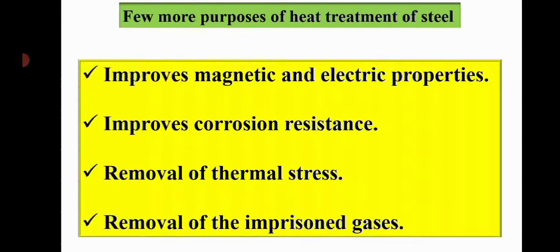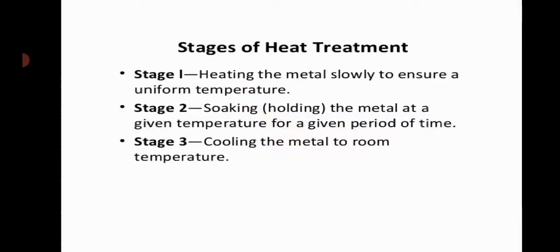The process of heat treatment consists of three steps. First, heating the metal slowly to ensure uniform temperature. Second, soaking the metal at a given temperature for a given period of time. Third, cooling the metal to room temperature.